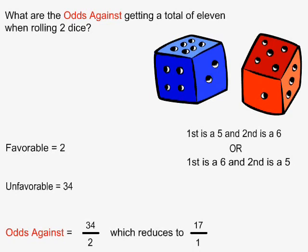There are two different ways of getting a total of 11, and we can illustrate this if we use different colored dice. The blue die can roll a 6 and the red die can roll a 5, and this gives us a total of 11. Or, the red die can roll a 6 and the blue die can roll a 5, and again we get a total of 11. This means that the number of favorable cases is equal to 2. Since there are 36 different things that can happen, the number of unfavorable cases is equal to 34.